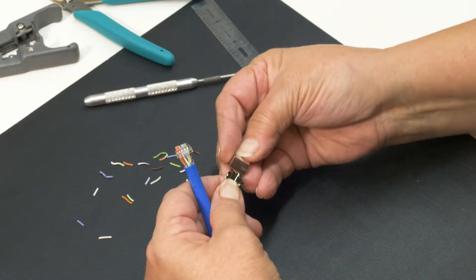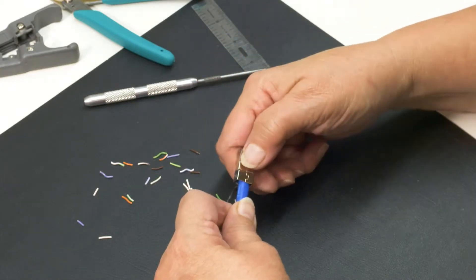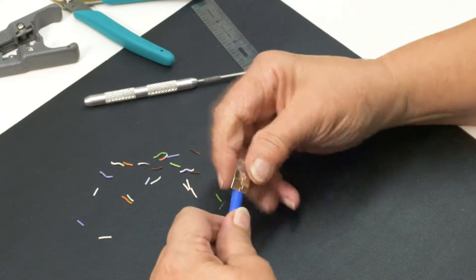Insert the cable into the shielded plug. Match pin one of the conductors to pin one of the connector. Check that the cable wires are all the way in the plug.